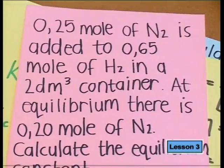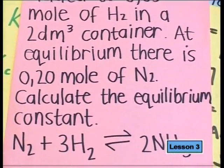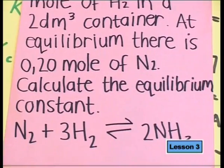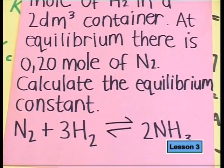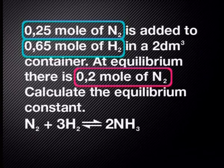Question three: 0.25 moles of nitrogen is added to 0.65 moles of hydrogen in a 2 dm³ container. At equilibrium, there is 0.20 moles of nitrogen. Calculate the equilibrium constant. This seems difficult with only one equilibrium value, so Amira steps in to help. She suggests grouping the information and using a RICE table.